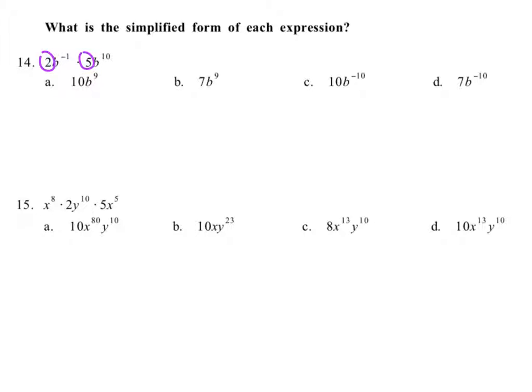So what is 2 times 5? 2 times 5 is 10. That is going to be your coefficient, so you can already see it's going to be A or C, not these two.